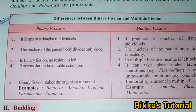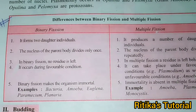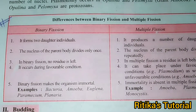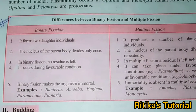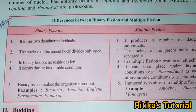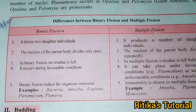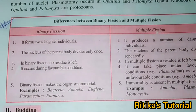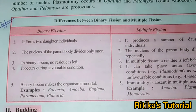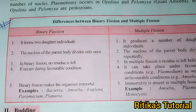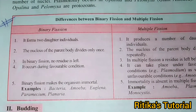Third point: in binary fission, no residue is left. Whereas in multiple fission, residue does occur. Next, binary fission occurs during favourable conditions — it occurs only when favourable conditions are present.